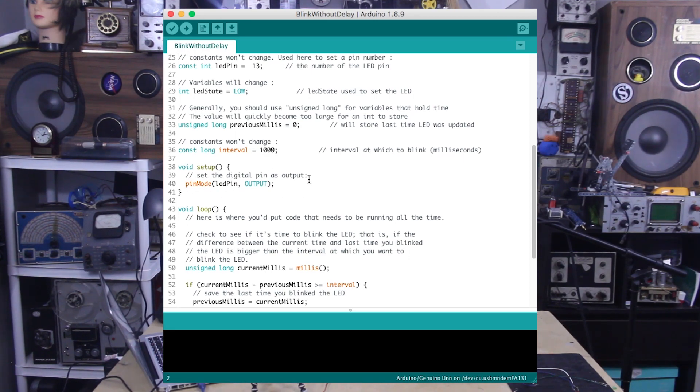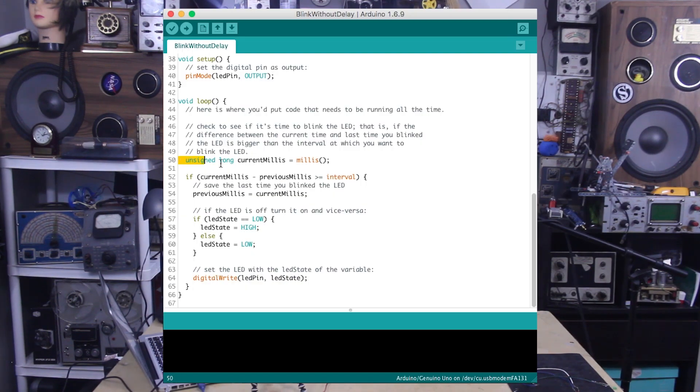Now time for the loop. Our goal is to check and see if the allotted time has passed, and if so, change the state of the LED either from off to on or vice versa, whichever the state may be. Setting the unsigned long current millis equal to millis() places the current time count in current millis.